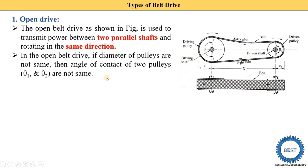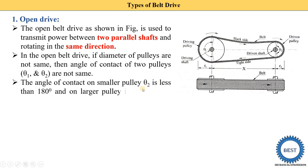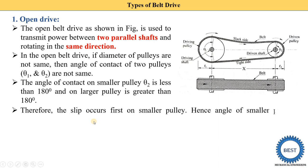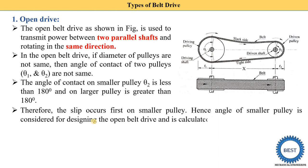Here the driving pulley has a larger diameter and the driven pulley has a smaller diameter. So the angle of contact theta 1 and theta 2 are different. For the driving pulley the angle of contact theta 1 is larger, and for the smaller pulley theta 2 is smaller. The angle of contact on the smaller pulley, theta 2, is less than 180°, and on the larger pulley it is greater than 180°.